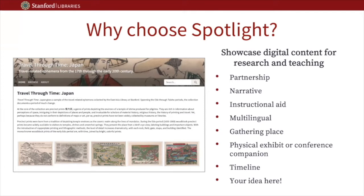As I will demo later in this presentation, Spotlight can be an excellent choice for a physical exhibit or conference companion. For an exhibit companion, pages within a digital exhibit can be used to reflect the major sections and individual cases of the physical exhibit. Images show the exhibit objects that were on display, while explanatory text reflects descriptions that accompanied those objects while they were on exhibit. An advantage of creating a digital exhibit companion is that this visual and textual record of the physical exhibit will persist long after the physical items are removed from the exhibit space.